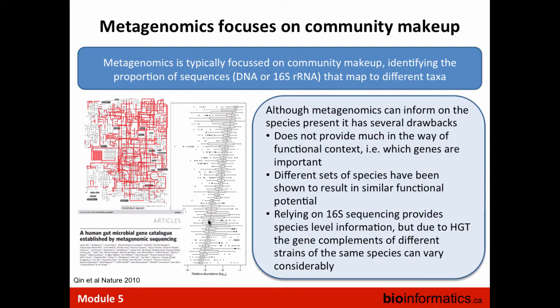In terms of 16S, although it can inform on species present, it has several drawbacks. It doesn't provide much functional context; it doesn't tell you which genes are important. Even with whole-genome shotgun sequencing you can see which genes are there, but not which are actively expressed. Different strains — for example, two strains of Lactobacillus — can vary by as many as 2,000 genes. So knowing the species doesn't tell you what genes or their activity. Due to horizontal gene transfer, gene complements can vary quite considerably even across strains of the same species.